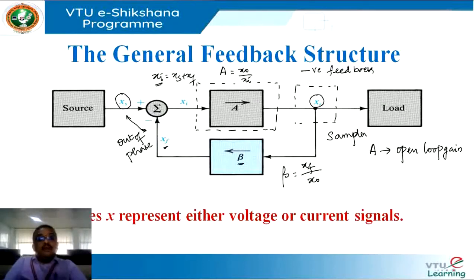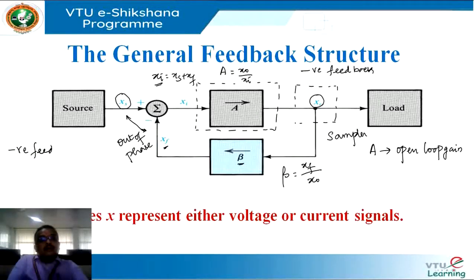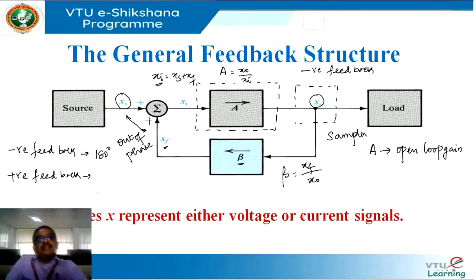Now how do we identify a block as negative or positive feedback? If Xf is with a negative sign, or if they are 180 degrees out of phase, we call it negative feedback. If I want positive feedback, I make Xf positive, meaning both signals are in phase — 0 degrees. This is how you identify the structure as negative or positive feedback.